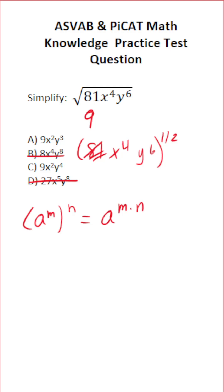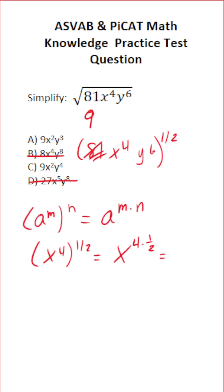So right here, what do we have? We have x to the 4th to the 1 half power. This is going to be equal to x to the 4th times 1 half. 4 times 1 half is 2, so this is x squared.